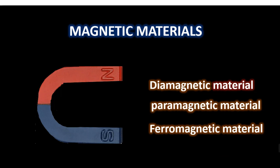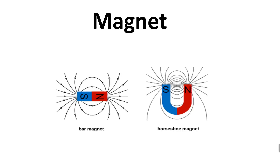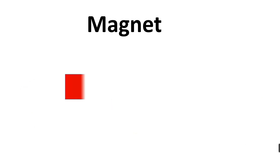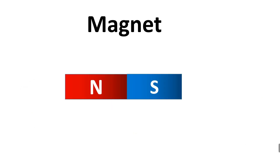In this video we are going to talk about what are magnetic materials. Before starting we should know what is a magnet. A magnet is an object or material that produces a magnetic field. It has the ability to attract certain types of metals such as iron, nickel, and cobalt. A magnet consists of two poles known as north pole and south pole.